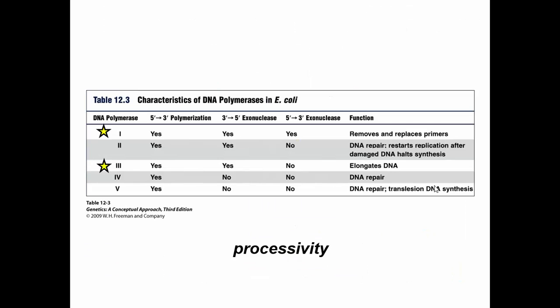In prokaryotes — E. coli specifically — there are about five DNA polymerases, and you want to know all five and their functions. The two main superstars are DNA polymerase 1 and DNA polymerase 3. DNA polymerase 3 is the one that elongates the DNA and replicates almost all of it. It has very high processivity, meaning the DNA polymerase can stay on a long time and keep replicating the DNA.